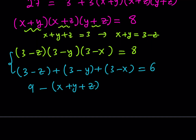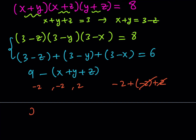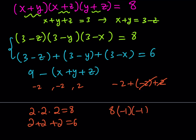For example, if we try −2, −2, +2, their product is +8 but their sum is −2, not 6 — so that doesn't work. The triplet 2, 2, 2 works: product is 8 and sum is 6. Another option: 8, −1, −1 — product is 8 and sum is also 6. These are the only valid integer solutions.